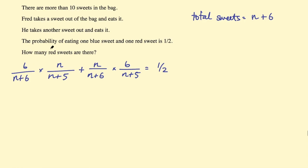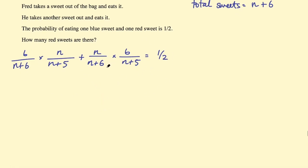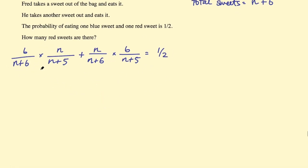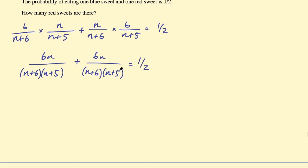So that's the equation you need to start with. This is the probability of picking a blue sweet then a red sweet or a red sweet and then a blue sweet. So we can go ahead and solve this now. If we combine these two fractions we get 6n over n plus 6 times n plus 5 plus 6n over the same thing n plus 6 times n plus 5, and all of that equals a half.